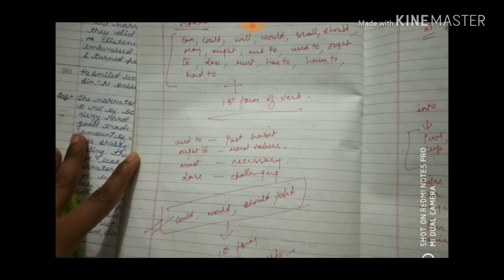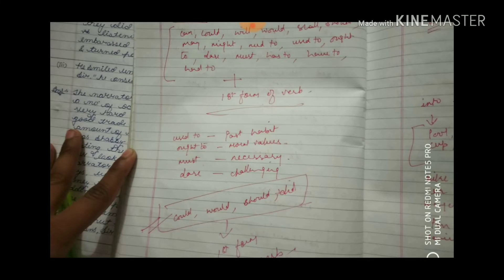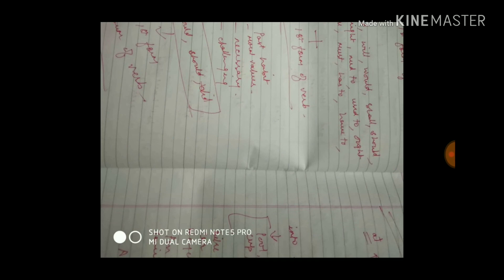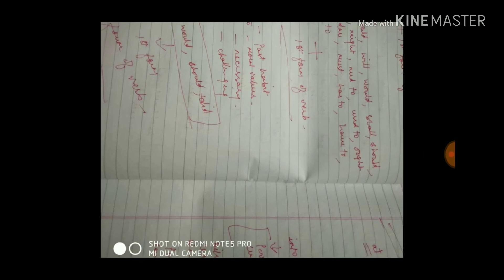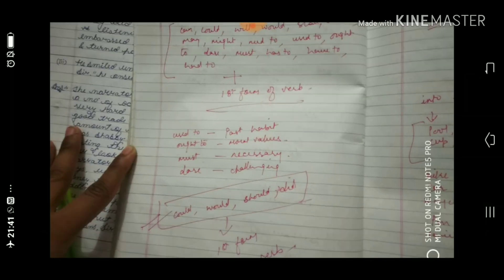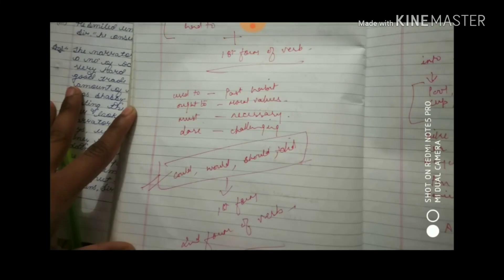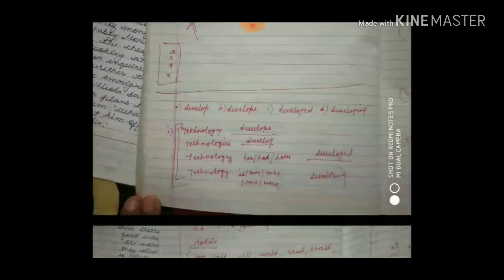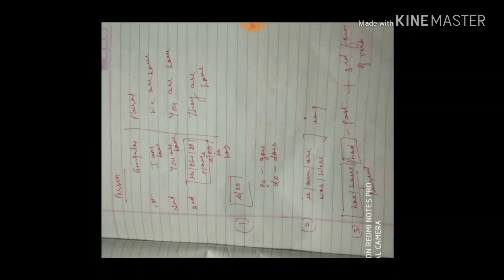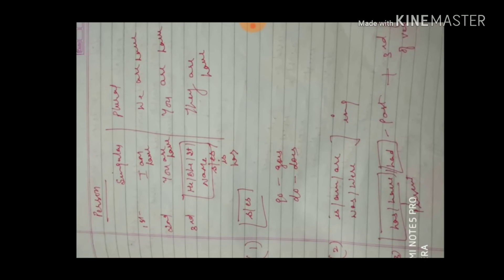'Must' is used where there is necessity: 'He must follow the traffic rules.' Keep these things especially in mind. Now let's talk about persons. Persons are of two types: singular and plural — first person, second person, third person.